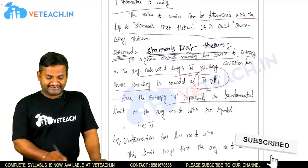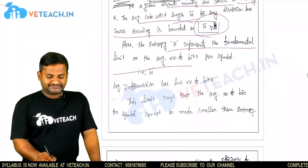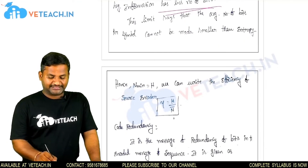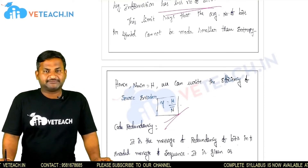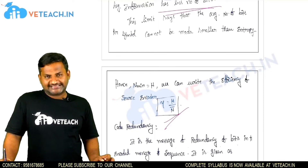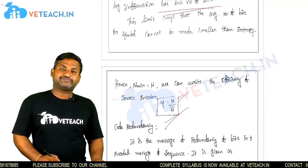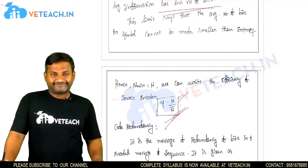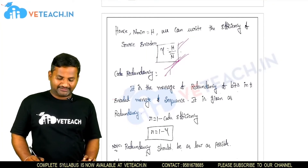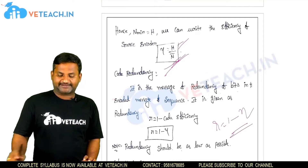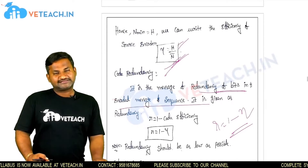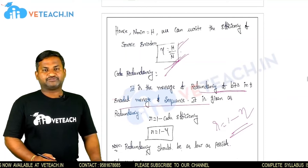The source encoder efficiency eta equals H divided by n-bar, where H is nothing but n-minimum. Efficiency eta equals H by n-bar, where H is the average information (entropy) and n-bar is the average code word length. After calculating efficiency, the code redundancy can be calculated as R equals 1 minus eta. The redundancy of bits in an encoded message sequence is R equals 1 minus eta. Redundancy should always be as low as possible. If redundancy is high, the data complexity is always high, so to reduce complexity, redundancy should always be maintained at a low level.